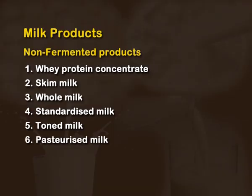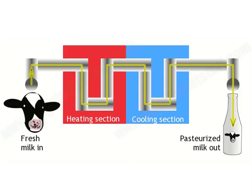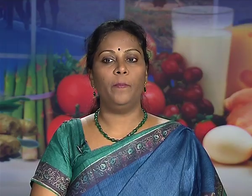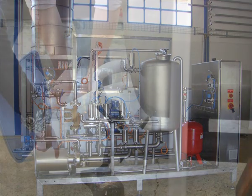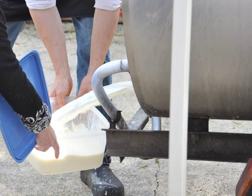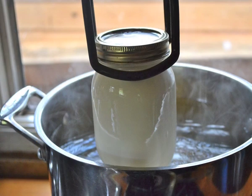Pasteurized milk is where the milk is subjected to a very mild heat treatment which helps in destroying bacteria and increasing the shelf life of the milk. This is one of the most popular heat treatments commonly applied to milk. Sterilized milk is where a very strong heat treatment is applied — a very high temperature — to ensure that all the bacteria in the milk are completely destroyed.